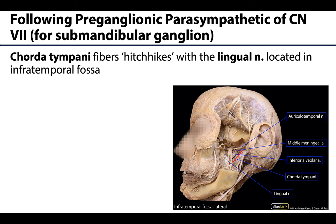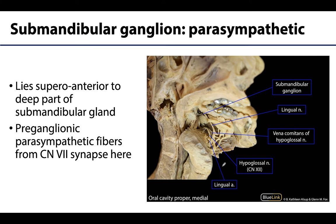The lingual nerve is headed toward the tongue in the oral cavity region because one of its major functions is to send sensory signals back to the CNS from the anterior portions of the tongue. The lingual nerve covers the same territory as the chorda tympani in regards to the tongue, but the chorda tympani carries special sensory or taste fibers, whereas the lingual nerve carries general sensory information — such as if you pinch or cut your tongue. So we have the chorda tympani hitchhiking with the lingual nerve, and throughout this entire time those chorda tympani parasympathetic fibers have remained preganglionic.